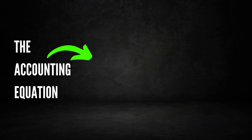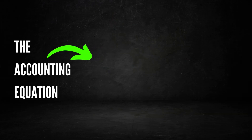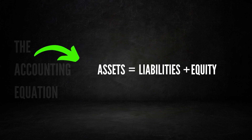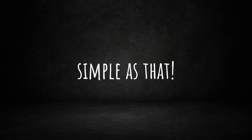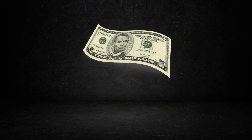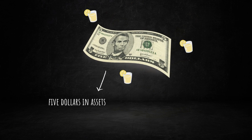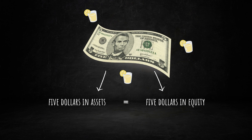Therefore, we can summarize the accounting equation as: assets equals liabilities plus equity. It's as simple as that. In our example, the $5 in cash that my lemonade business possesses is considered an asset, and the $5 that the business owes me is classified as equity. As you can see, the equation remains perfectly balanced.